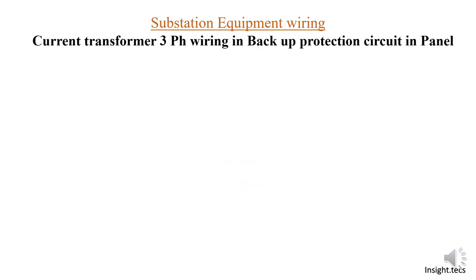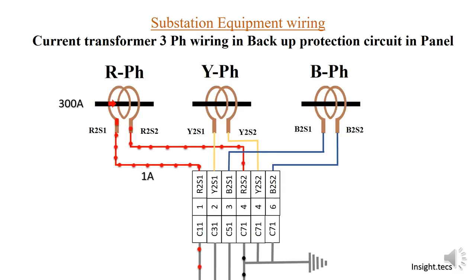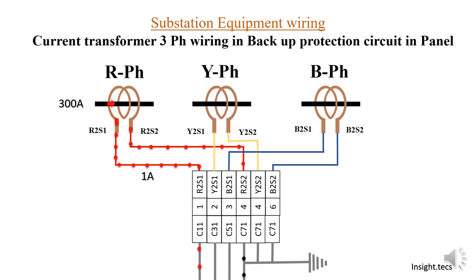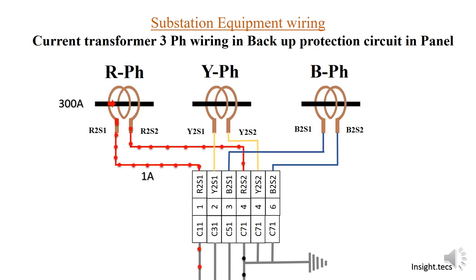As we have seen the metering circuit, which is in the backup protection circuit — now we can see that. For backup protection, we have seen the circuit of the outdoor circuit. It comes to R phase, which is protected by R2S1 and R2S2. The combination of its three phases releases four wires: C11, C31, C51, and C71. Now we can see what they are going to do in the panel.